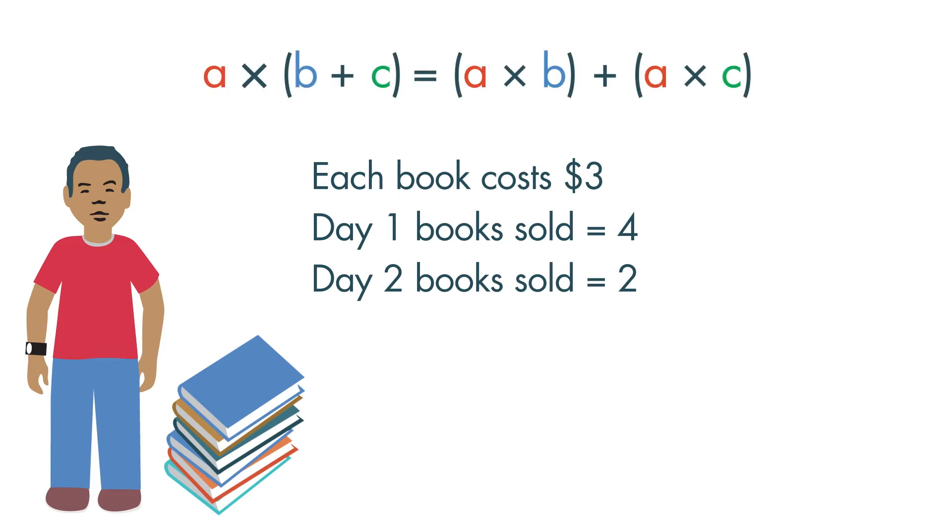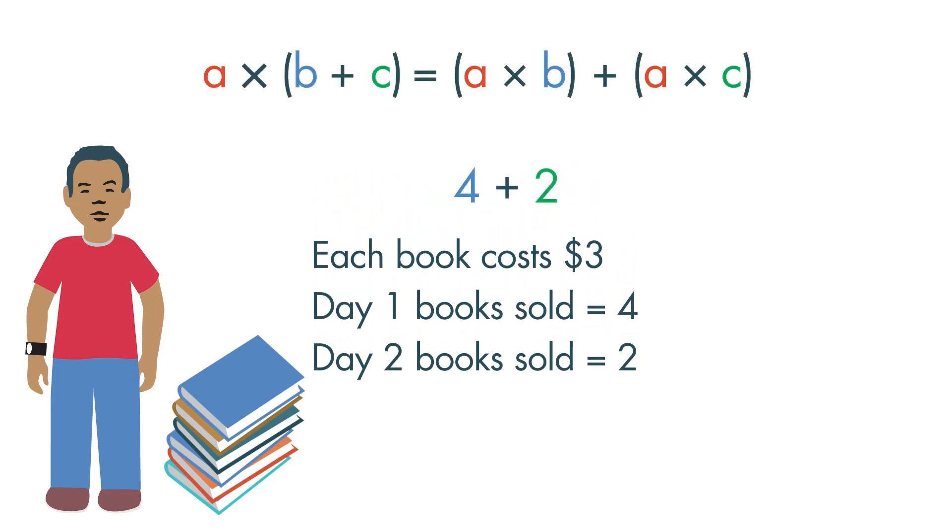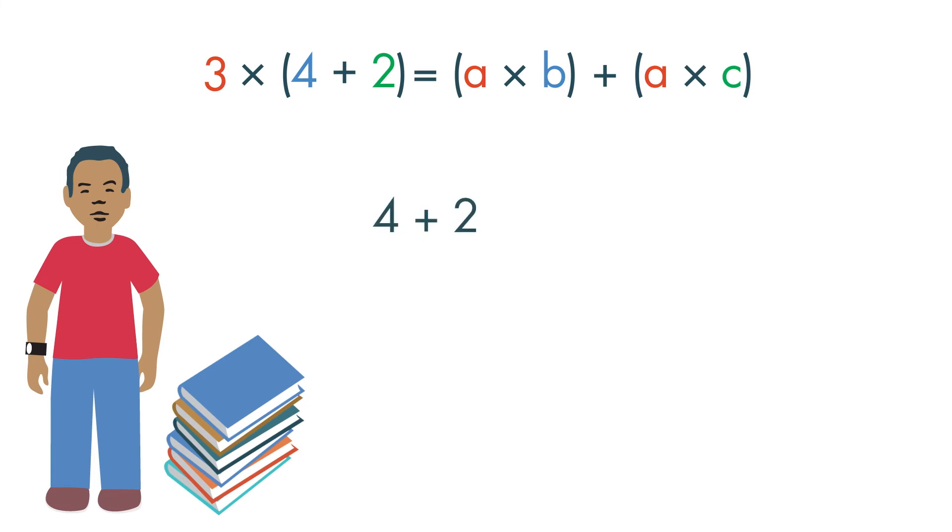We can figure out how many books he sold, 4 plus 2, and then multiply by the price, $3. 4 plus 2 is equal to 6. 3 times 6 is 18. Louis made $18.